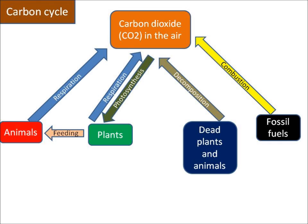It is released into the atmosphere in three different ways. When animals and plants respire, they release CO2 into the air. Also, when fossil fuels like coal and oil are burnt or combusted, they release CO2. And finally, when plants and animals die and decay, CO2 is also released into the atmosphere.